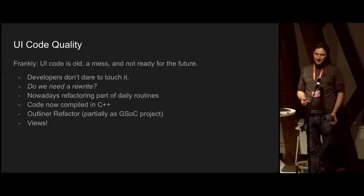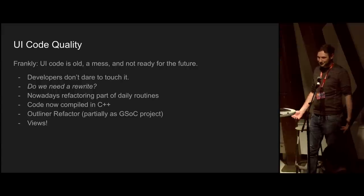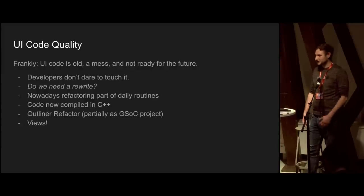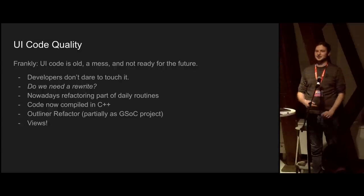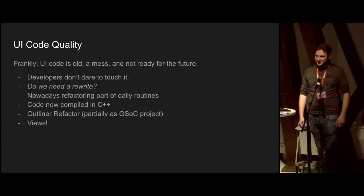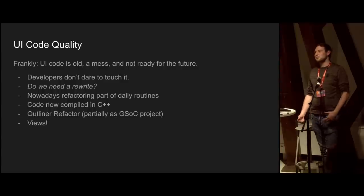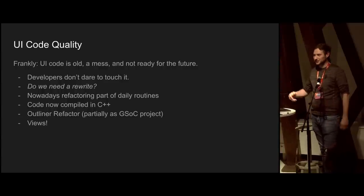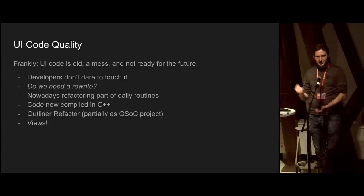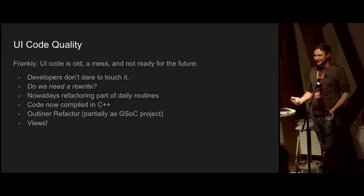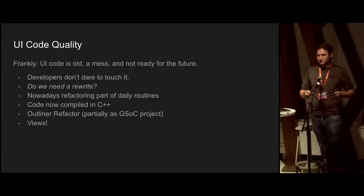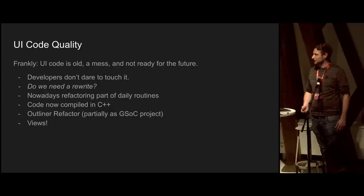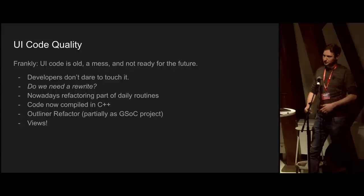The big question: do we need a rewrite? We definitely need to rework parts of it, but you easily end up with second system syndrome — trying to replace an entire system, making it perfect, and it never gets done. So I want to do some bigger rewrites but slice them up into manageable pieces. I want something more future-proof that gives us more features and better tooling for developing user interfaces in Blender.